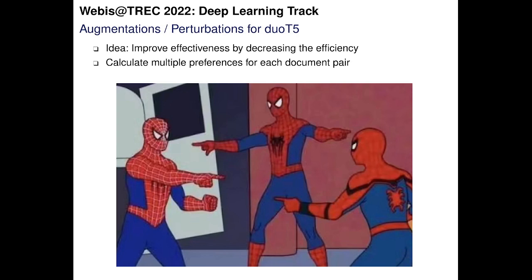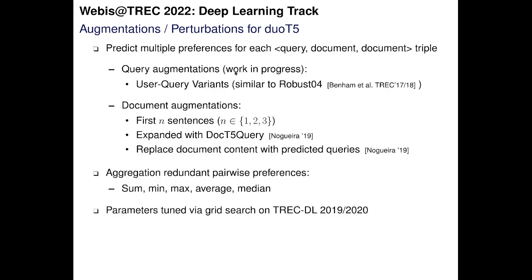We submitted two more runs where we applied augmentation and perturbation strategies for Duo T5. The basic idea was to improve effectiveness by decreasing efficiency, calculating multiple pairwise preferences for each document pair. The input to Duo T5 is always a triple: query, document, document. We can augment queries with user query variants, similar to what was done on Robust04. We applied document augmentation — for example, using the first N sentences, expanding the document with Doc T5, or replacing document content with predicted queries via Doc T5. We produced multiple scores per document and aggregated them using min, max, average, and median.